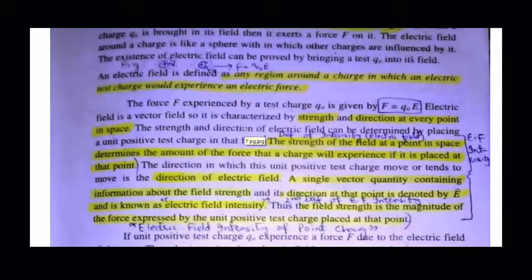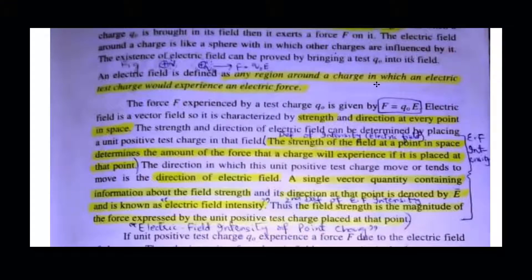We consider the electric field's magnitude as its strength and direction. That's why we say the electric field is a vector field. This is the definition: any region around a charge in which an electric charge would experience an electric force. This definition is already known because we discussed it previously.